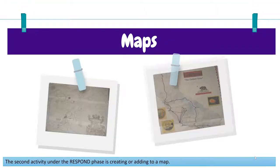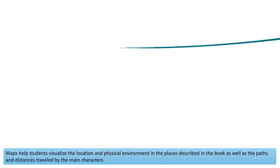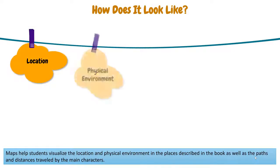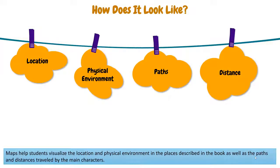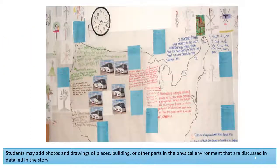The second activity under the RESPOND phase is creating or adding to a map. Maps help students visualize the location and physical environment in the places described in the book, as well as the paths and distances traveled by the main characters. Students may add photos and drawings of places, buildings, or other parts of the physical environment that are discussed in detail in the story.